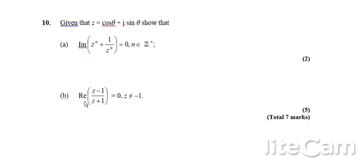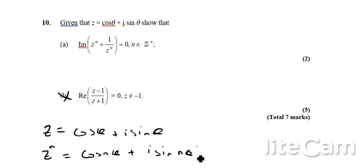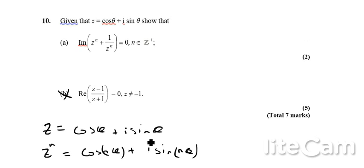Okay, and the last question. I think we'll probably just look at the first part. It goes on a bit, the second bit. So, there we go. I've got z equals cos theta plus i sine theta. I want to show that the imaginary part of z to the n plus z to the minus n is equal to 0. Well, if z is cos theta plus i sine theta, then I'm going to have z to the n equals cos n theta plus i sine n theta.